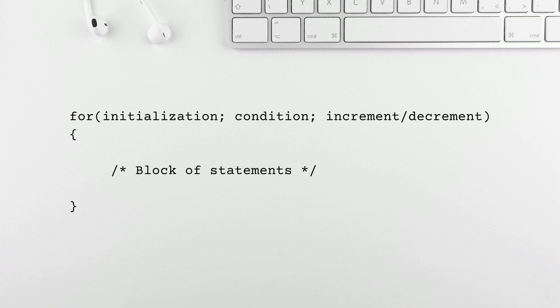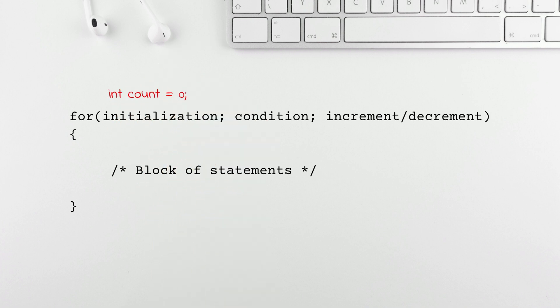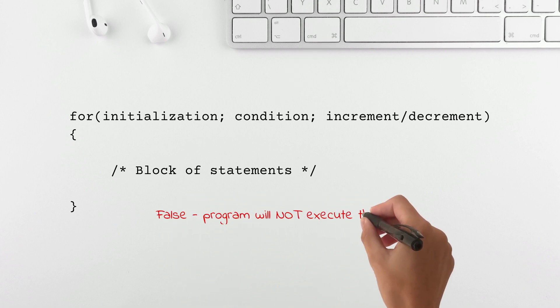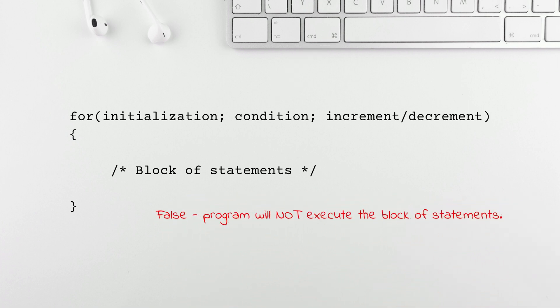The block of statements associated with the for loop needs to be enclosed within curly braces. This is how the for loop works. The program will first perform the initialization when it encounters the for keyword. The initialization is where the variable can be declared and given an initial value — for example, int count = 0. Once the initialization is done, the program will evaluate the condition part. The condition can evaluate to true or false. If the condition evaluates to false, the program will not execute the block of statements enclosed within curly braces.